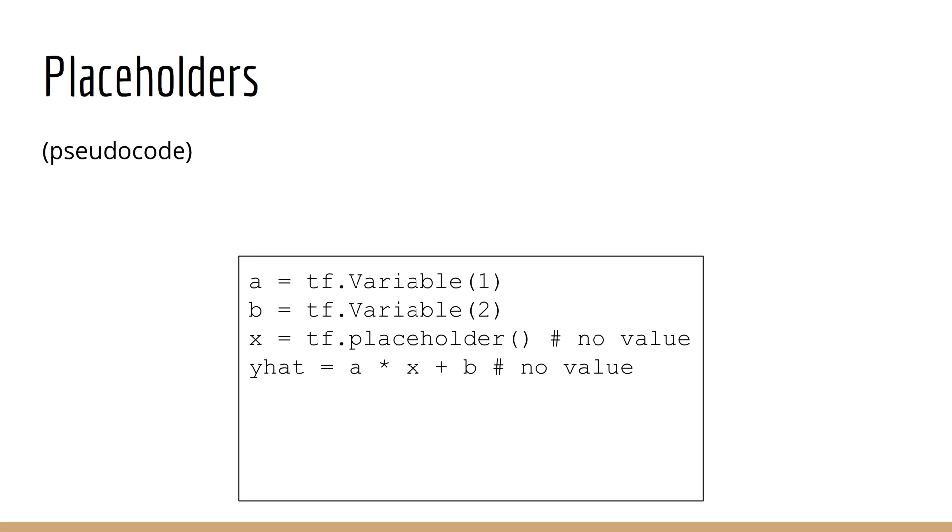So here's how we would define a linear regression model in TensorFlow 1. First, we would have our two variables, a and b. Then you would have some input data x. Importantly, this input data x has no value, it is a placeholder. As you know, y hat is a times x plus b. But now, since x does not currently have a value, neither does y hat. In other words, we're just telling TensorFlow how all these variables are related, y hat is a times x plus b. But they don't have values yet.